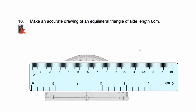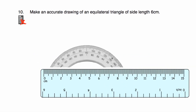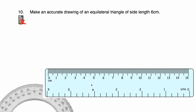Question number 11 says: make an accurate drawing of an equilateral triangle with side length 6 centimetres. You can do this in two ways — using a ruler and protractor, or constructing it using a compass. I'm going to use a ruler and protractor. You could also use compasses; if you go to CobraMavs.com/contents and find the video on constructing triangles SSS, that will show you how. Let's start by drawing a 6 centimetre base — starting at 0 and going across to 6 centimetres.